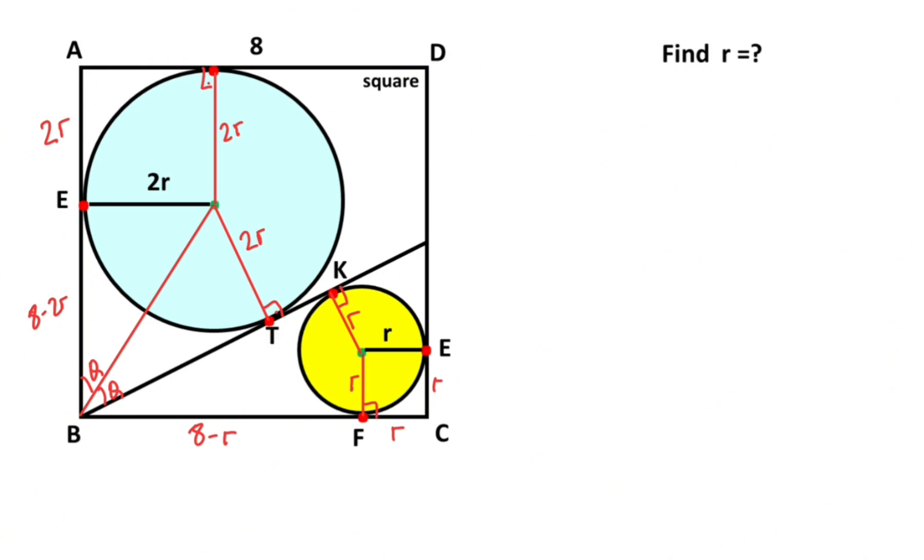So if we connect these two points, if here is alpha, here must be equal alpha. Okay, so it's that 2 alpha plus 2 theta equals 90 degrees. It means alpha plus theta equals 45 degrees.